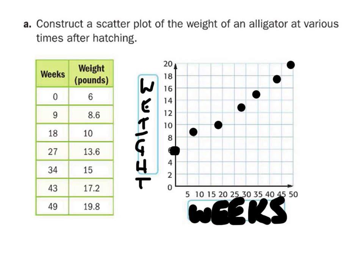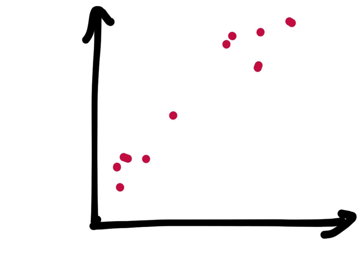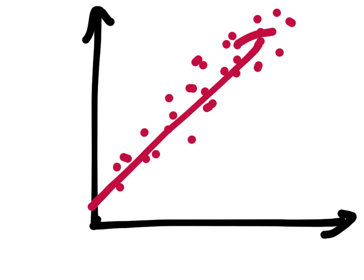You guys see a pattern here? Yeah, there's a pattern. What would be the relationship of x in comparison to y? It's going up — this would mean that it is a positive relationship, because it's going up. That is positive.